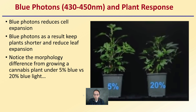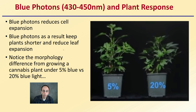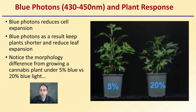Blue photons reduce cell expansion, tending to keep plants shorter and stockier. Blue photons keep plants shorter and reduce leaf expansion. Comparing 5% blue versus 20% blue, the plant grown under 20% blue is definitely stockier with shorter internodes. This morphology difference in cannabis plants grown under 5% versus 20% blue light shows a pretty evident reduction in plant height.